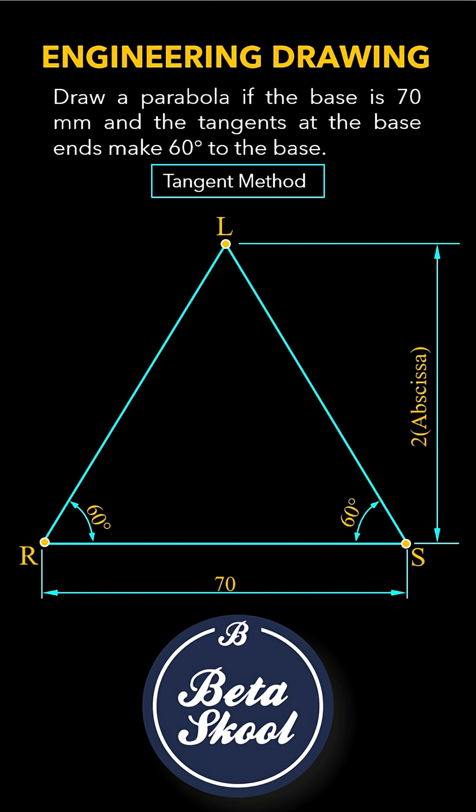Now divide RL and SL into the same number of equal segments, say 6 segments. First divide RL into 6 equal segments and label them as 1, 2, 3, 4 and 5. Next, divide SL into 6 equal segments and label them as 1 dash to 5 dash.